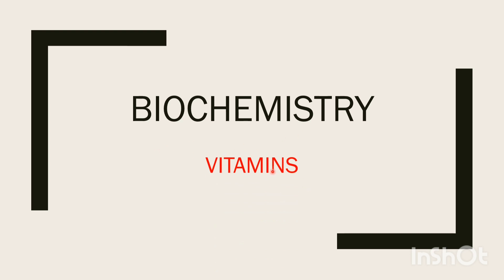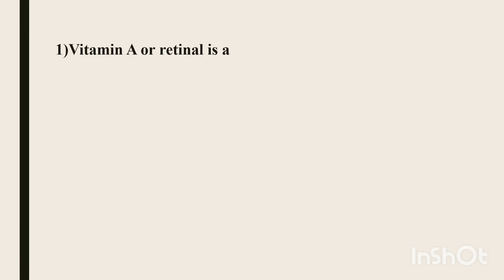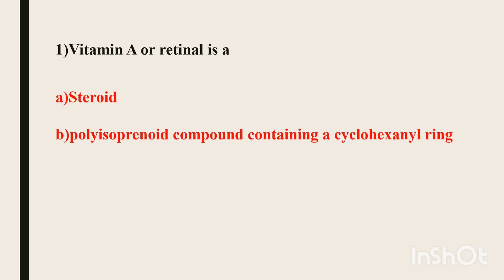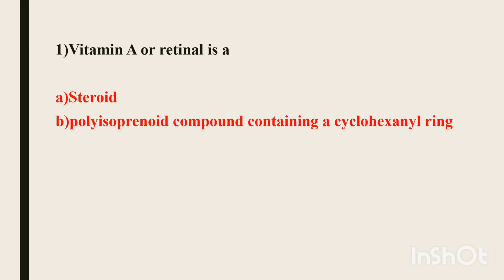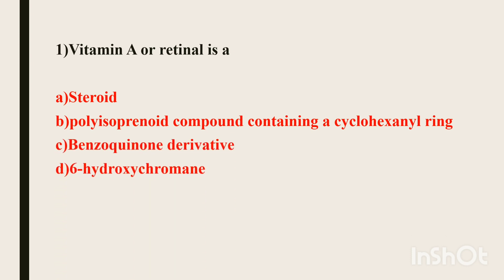First question. Vitamin A, or retinal, is a — Option A: steroid. Option B: polyisoprenoid compound containing a cyclohexanol ring. Option C: benzoquinone derivative. Option D: 6-hydroxychromane.